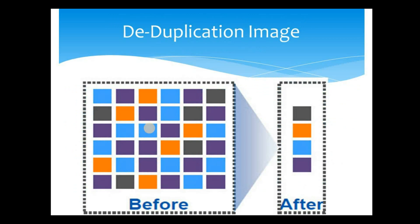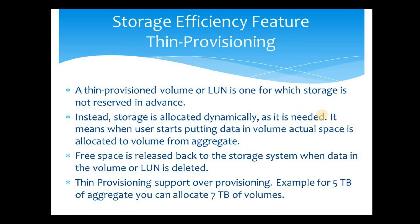Let's see how deduplication works in terms of an image. This image shows data blocks before and after deduplication. Each color represents the same data stored in different blocks. Taking the black color data block as an example — many blocks have the same black color, meaning they contain the same data. After deduplication runs, all duplicate blocks are removed and only a single block is stored. Data ONTAP then points only to that single block, increasing storage efficiency.